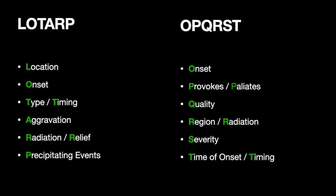OPQRST is the mnemonic standardized in the MFR program and measures effectively the same things: Onset, Provocation and Palliation (what makes it worse or better), Quality (what does it feel like), Region and Radiation (where is the pain, does it radiate), Severity (is it 6 or 8 out of 10), and Time (when did it start and is it constant or intermittent). OPQRST includes severity, which isn't explicitly built into LOTARP — this may make it more helpful for some.